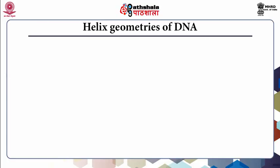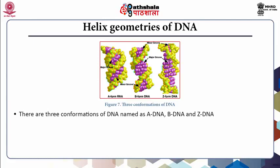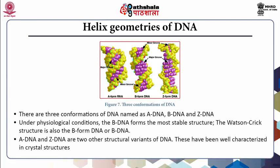The DNA molecule exhibits conformational flexibility and therefore it can exist in alternative structural forms. There are three conformations of DNA named A-DNA, B-DNA, and Z-DNA. Under physiological conditions, the B-DNA forms the most stable structure and therefore it is considered the standard reference in any study. It mostly predominates in the cell. The Watson-Crick structure is also the B form of DNA.